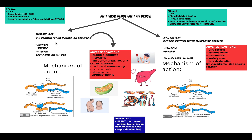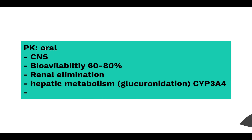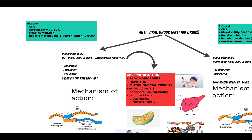The main drugs to know pharmacokinetically are zidovudine, lamivudine, and stavudine. They have a short plasma half-life of one hour and are orally administered. Zidovudine and stavudine have CNS penetration but lamivudine does not. They have a bioavailability of 60-80% with renal elimination and undergo glucuronidation.